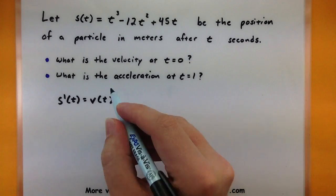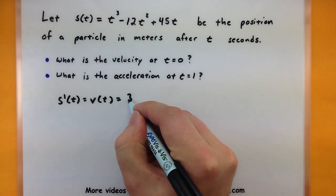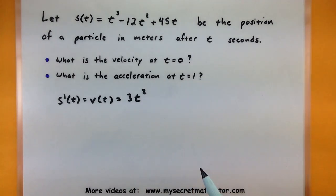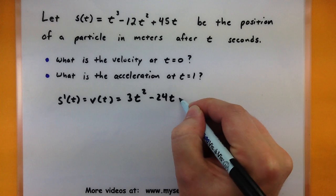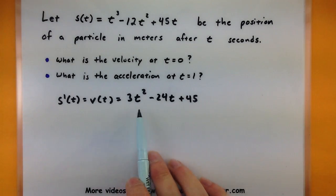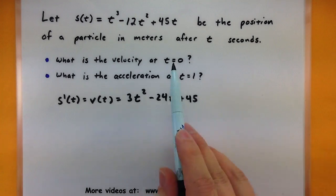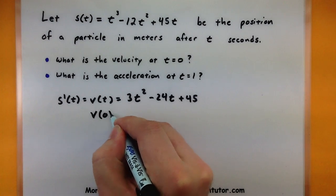It looks like we can use the power rule on it. We would simply take the powers, drop them down in front, and reduce the power by one. So this represents my velocity. Now we can figure out what the velocity is after zero seconds by plugging in a zero.